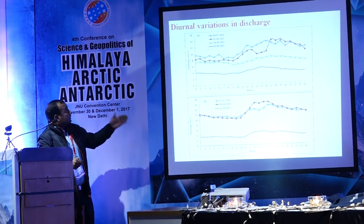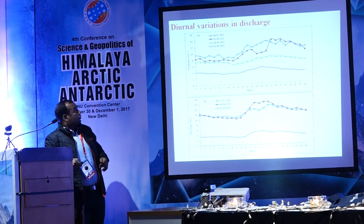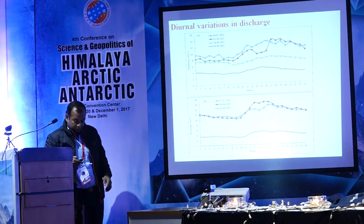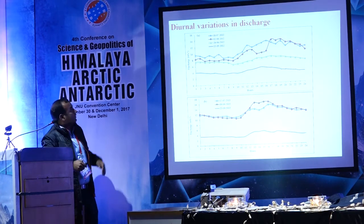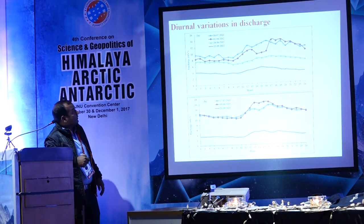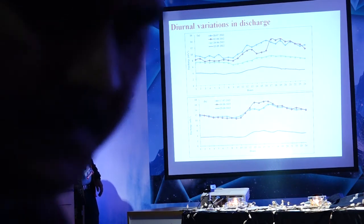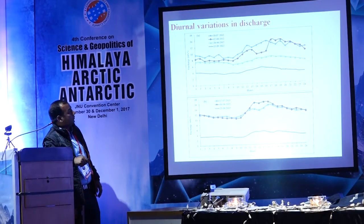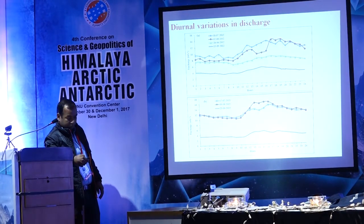This diagram shows the distribution of discharge during the melt period. The minimum discharge is observed during the morning time, around 7 to 9 AM, and the maximum discharge is observed during the afternoon, around 4 to 6 PM.